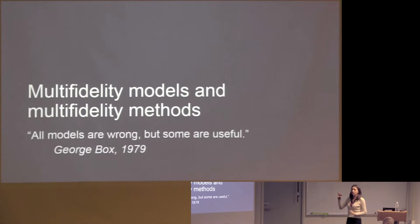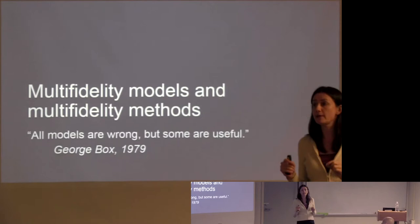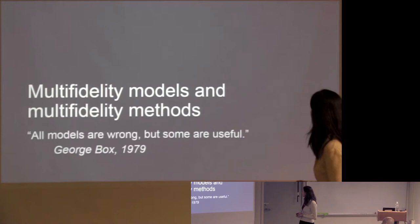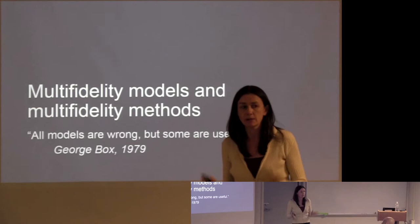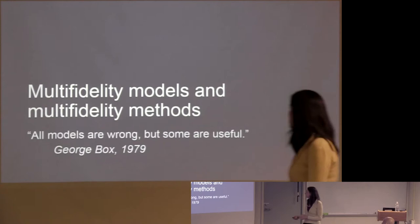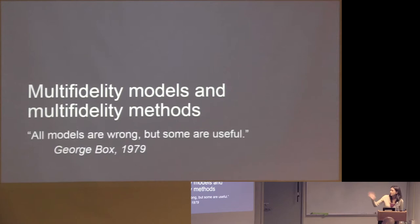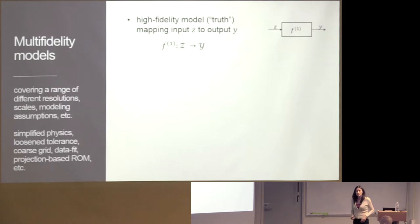Second part of the talk. I've just told you how we construct reduced models and adapt them. I love this quote — it's overused, but if you had to describe my research in one plain sentence, it's about creating wrong models and then trying to figure out how to make them useful. This quote from George Box really captures it. So: multi-fidelity models and multi-fidelity methods — how do we draw on a range of models, take models that are wrong, and make them useful for our particular problem?